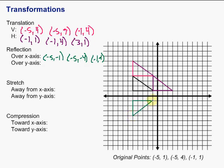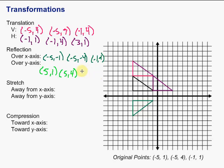If we want to reflect over the y-axis, we change the sign of the x-coordinates — again, it's always the opposite of the axis we're reflecting over. So negative 5, 1 becomes positive 5, 1; negative 5, 4 becomes positive 5, 4; and negative 1, 1 becomes 1, 1. If we graphed those, we would find that the triangle reflects over the y-axis.